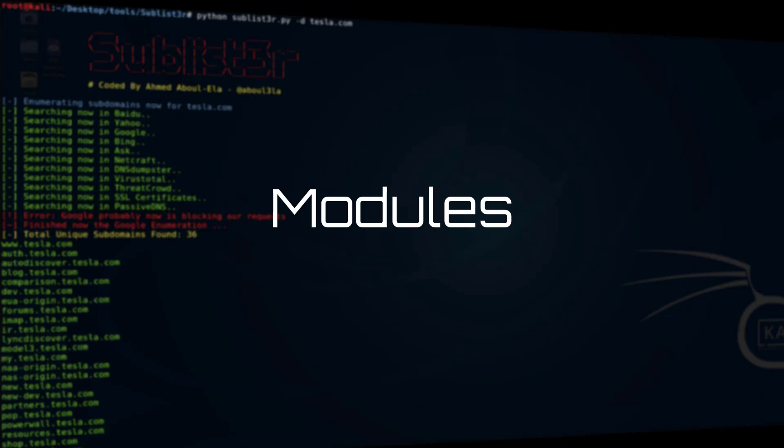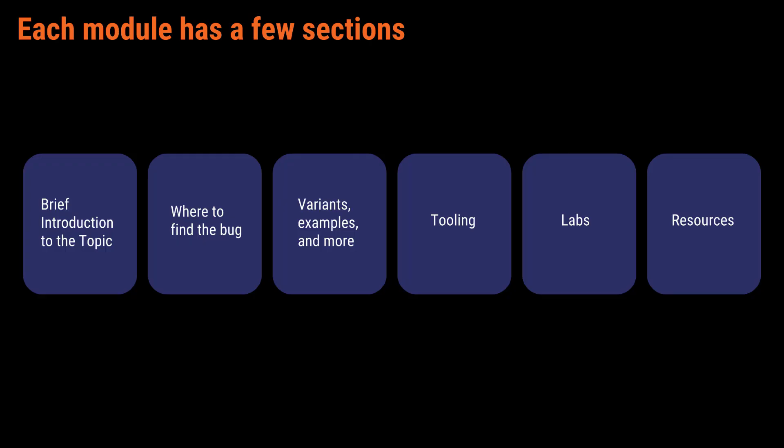Each module has a few sections. First you'll have a brief introduction to the topic, then where to find the bug, then variants, examples, and other tips and tricks. Then we'll show you up-to-date tooling that helps you find these bugs, go over labs you can use to practice your skills, and then provide any auxiliary resources pertinent to finding these bugs.